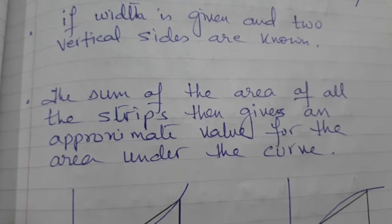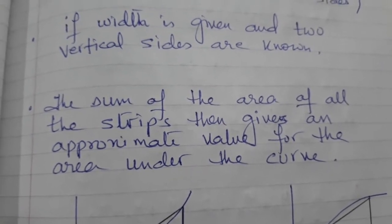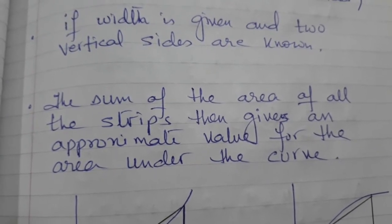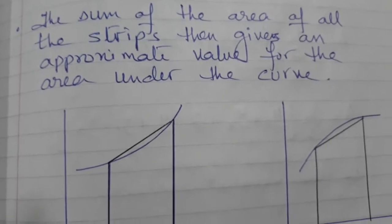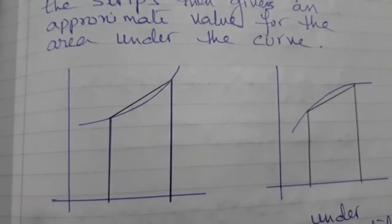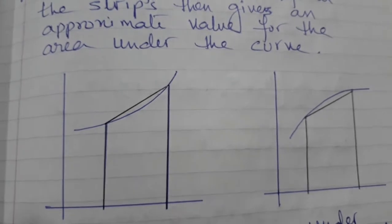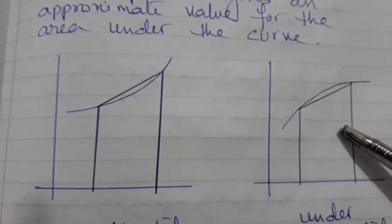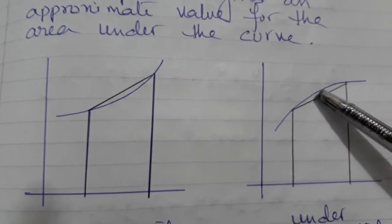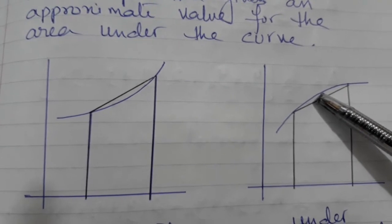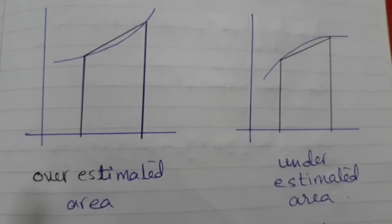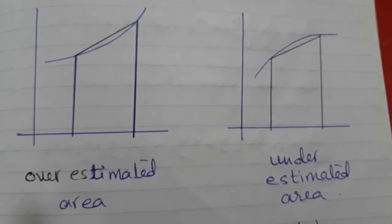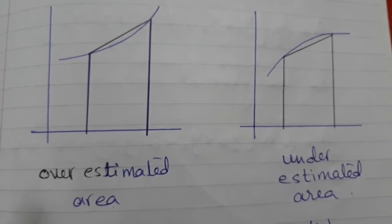Now why do we call it an approximate value? The area we get by using the trapezium rule — why do we call it estimated or approximate? The reason is: the trapezium can give us a little extra area in some cases, whereas in others the trapezium gives a little less than the actual area because a portion is left behind. That is why it is called overestimated or underestimated area, which is often asked in the exam.